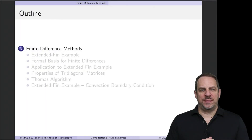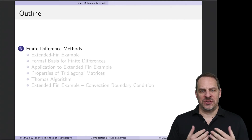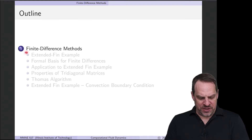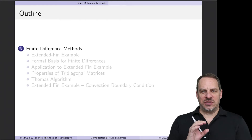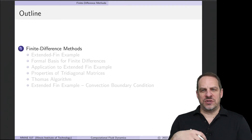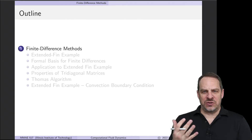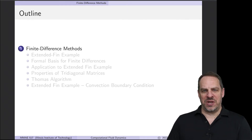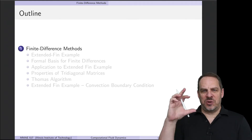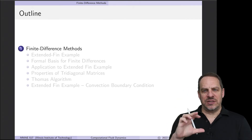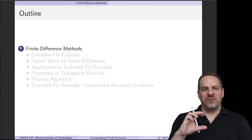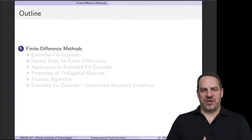In the previous video, we looked at four popular numerical methods used for approximating ordinary and partial differential equations in science and engineering. Here we're going to focus on the finite difference method. In this video, I'll introduce a specific one-dimensional example that's relatively straightforward, and we'll walk through the numerical solution procedure — specifically the first two steps.